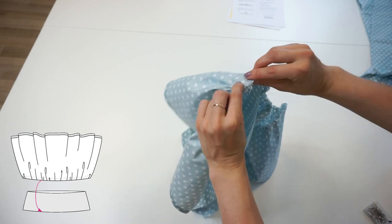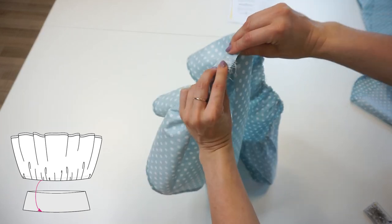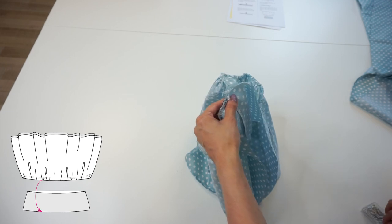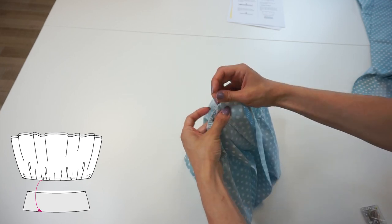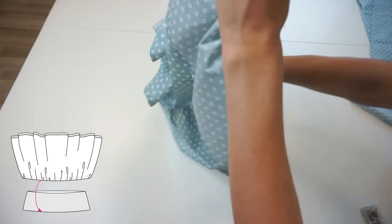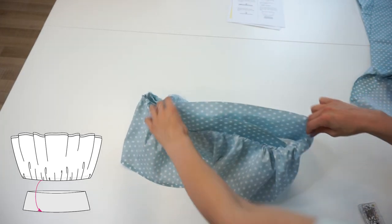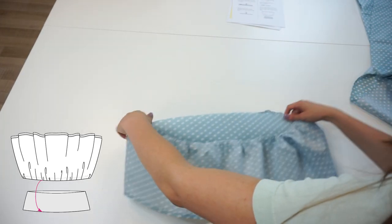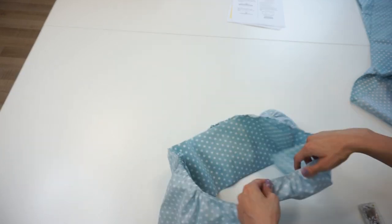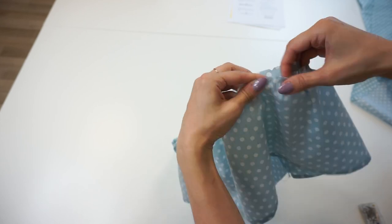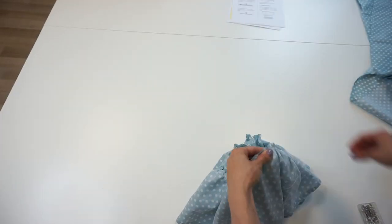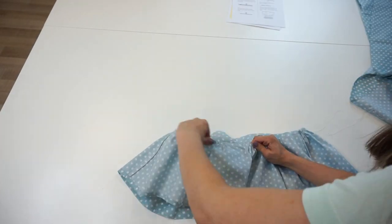I suggest to start by matching the side seams. Now you can perfectly adjust the gathering to the necessary length and finish with pinning around.